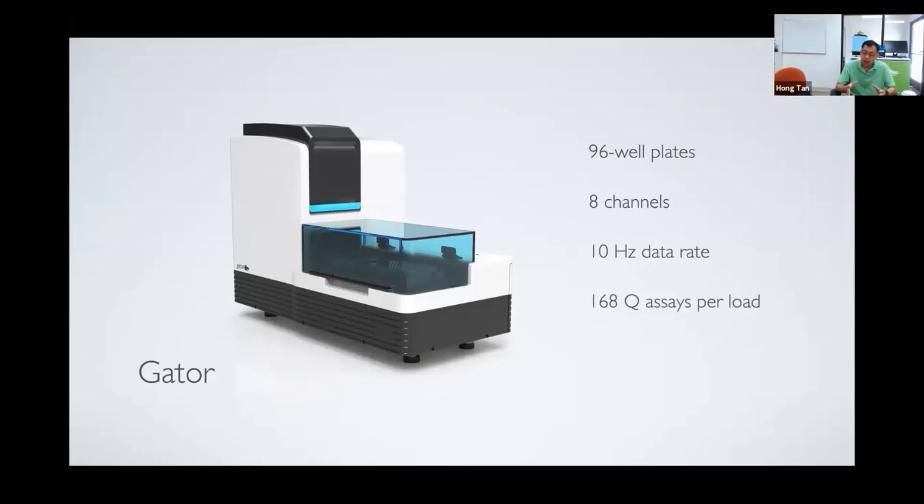Because we can put two 96 well plates in the system, we expanded the instrument capacity. You can run 168 quantitation assays per load. Each time you load two plates, you can run 168 assays continuously. The best thing about this technology is it's fluidics free, which means you don't need to worry about pipes, tubings, valves. Everything is in microtiter wells, 96 wells. The instrument is literally plug and plate.